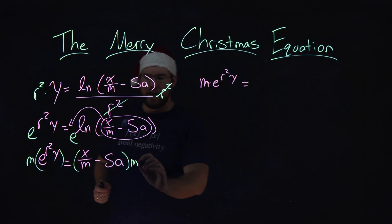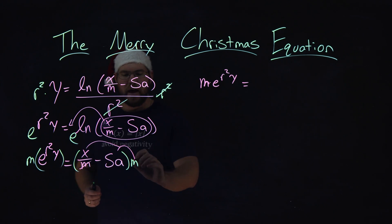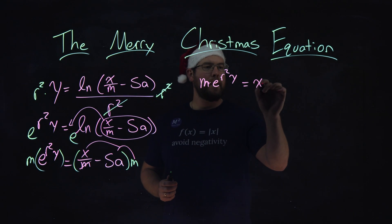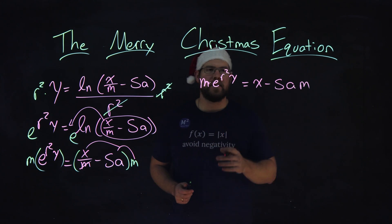All right. This cancels out. This m needs to distribute here, but it cancels out down here. And we have an x minus an sam. Pretty easy here.